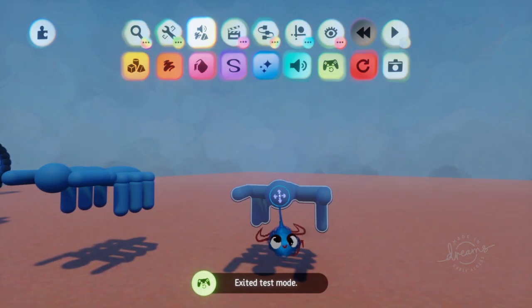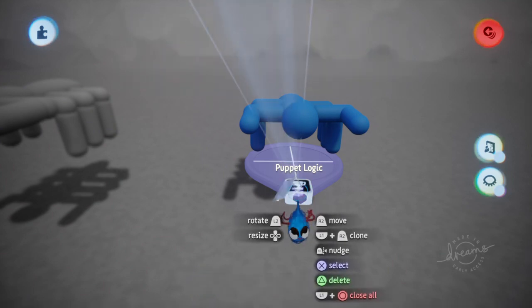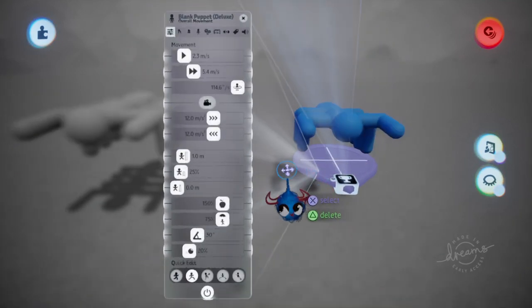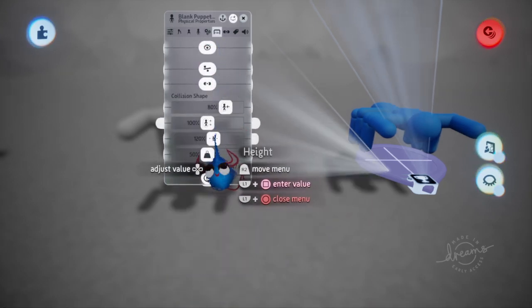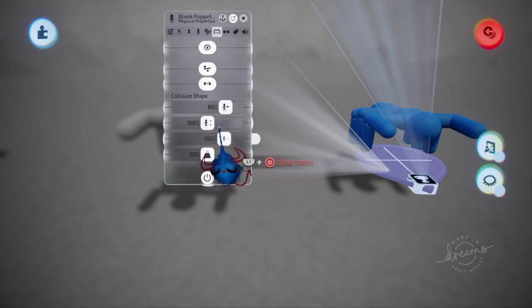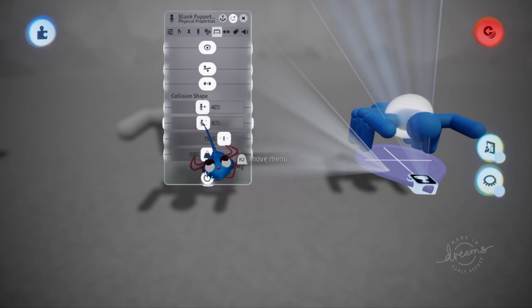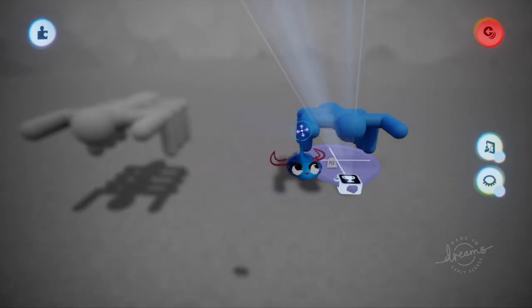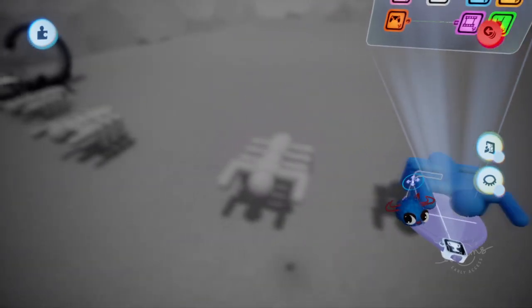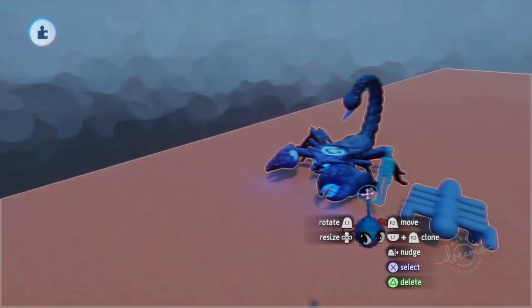Also, when you're in the puppet, the collision zones are still there. You can mess with those, send them around your character depending on what type of character you have. And that's pretty much how I made my scorpion.